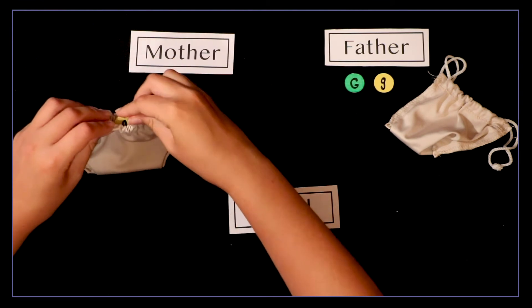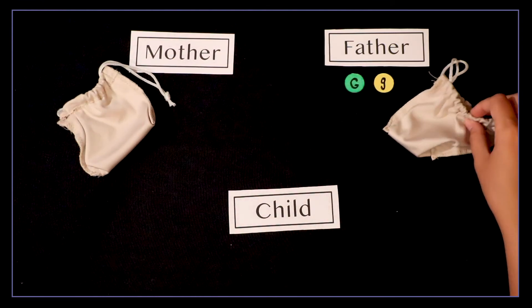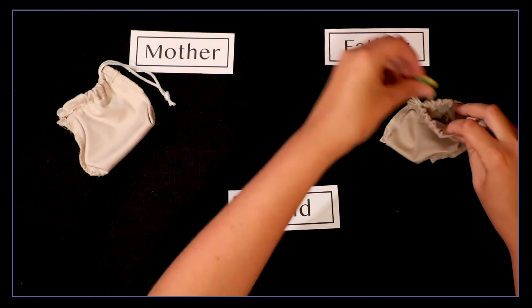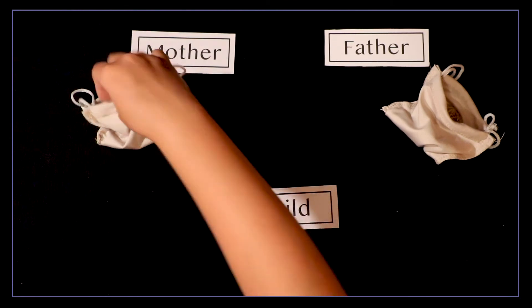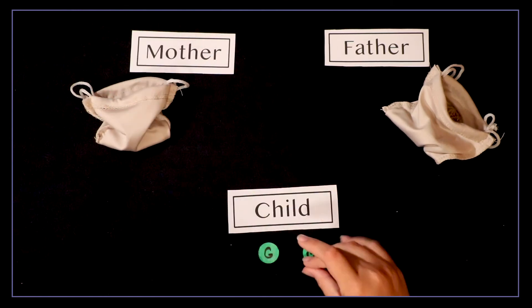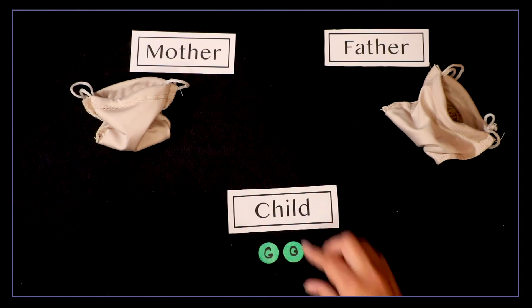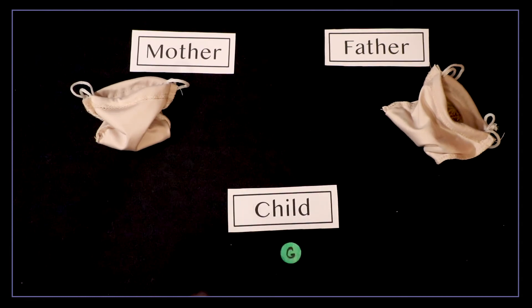Now if both parents are heterozygous there are four different combinations for the baby. I could pull out green from the father and green from the mother making this baby genotypically uppercase GG and phenotypically green.